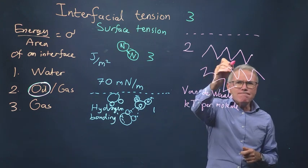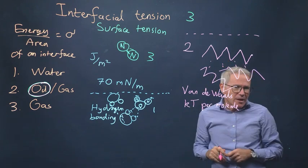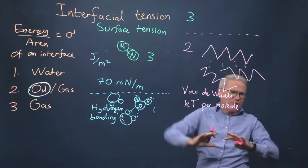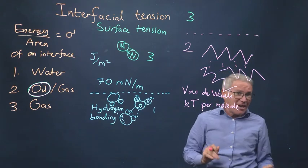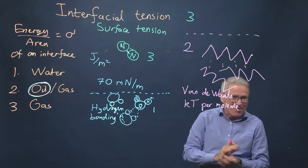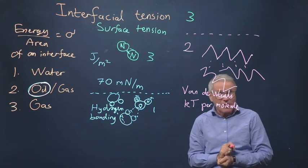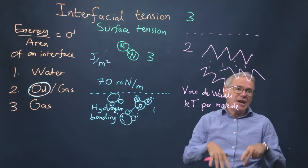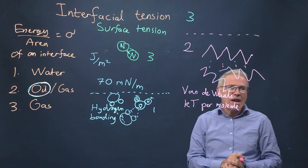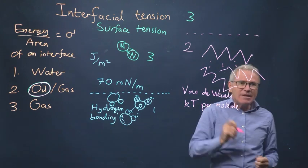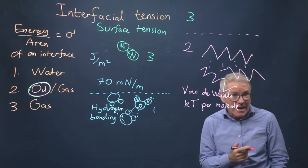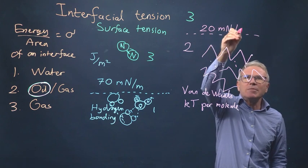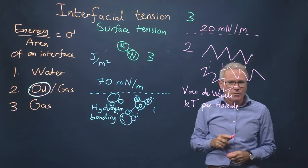Now, these interactions are much, much weaker. So if we break half of the van der Waals forces, it's about kT per molecule, and you can sort of go through the mathematics and estimate it. It's not a very precise calculation, but it is something you can measure. This is going to be much lower than that 70 millinewtons per meter. And at ambient conditions, typically, the interfacial tension between a hydrocarbon, say decane, and air is about 20 millinewtons per meter.